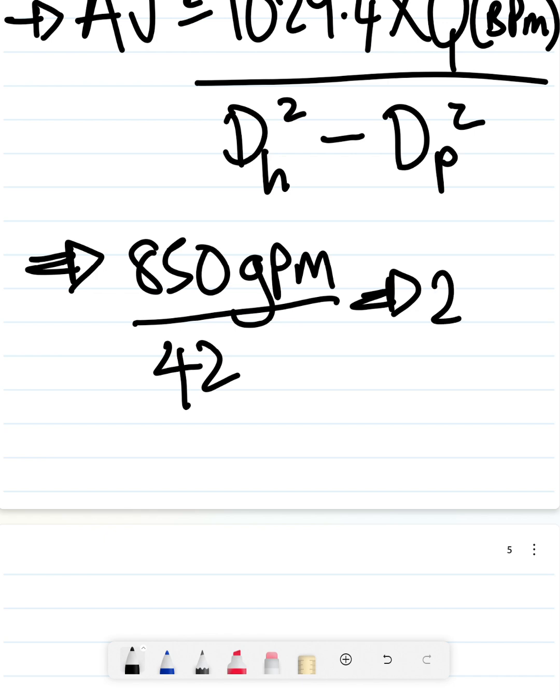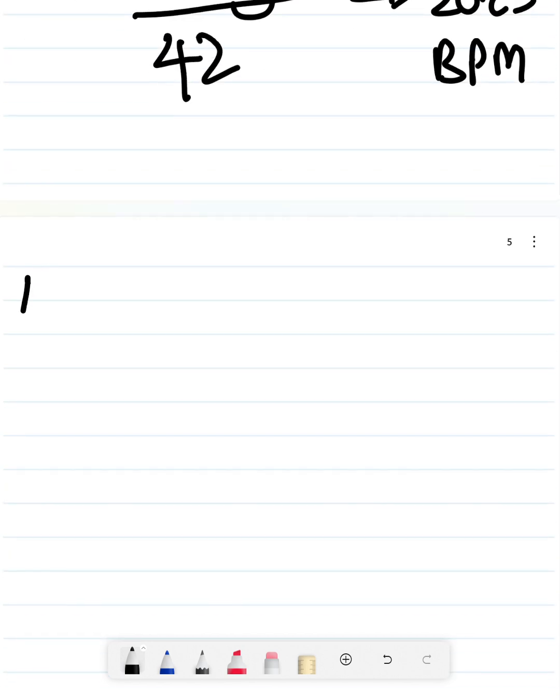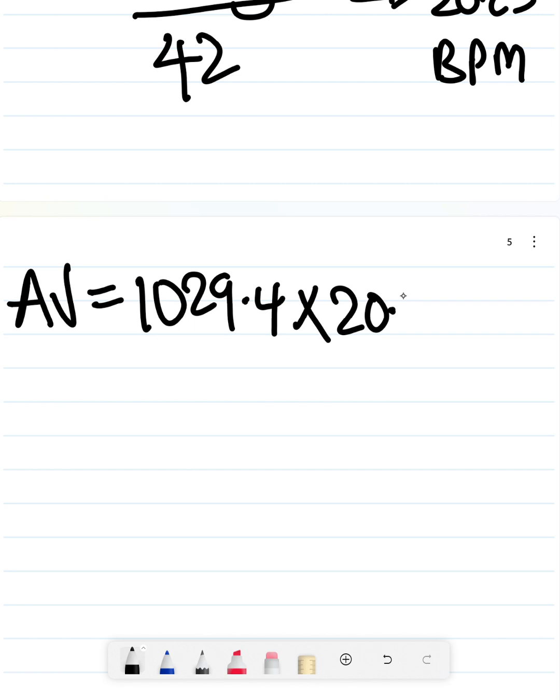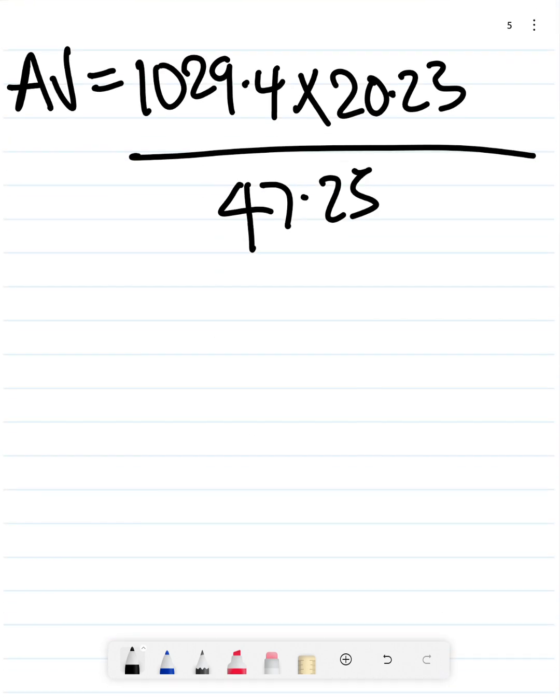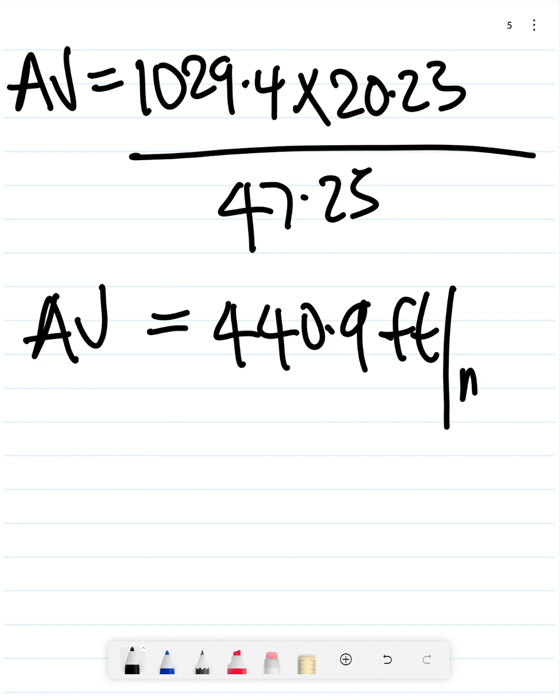Plug that in the equation. Your annular velocity is going to be 1029.4 times 20.23 divided by 47.25. When you do the numbers you see that you're going to have the same value, about 440.9 feet per minute.